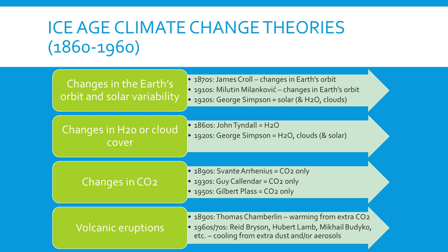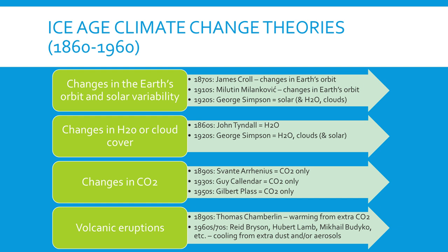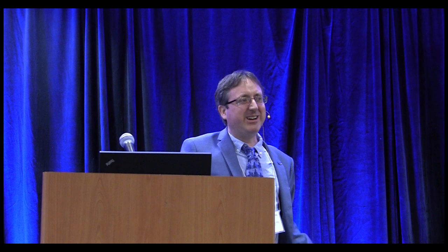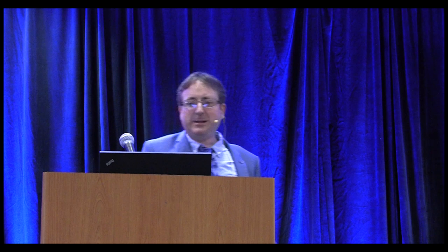Nowadays the prevailing IPCC consensus is that the ice ages are due to Milankovitch cycles — changes in Earth's orbit — but we still hold to the notion that CO2 is dominant for short-term climate change. Many people hear that Svante Arrhenius in the 19th century proved CO2 was the driver of climate, but a few years later his Swedish colleague Knut Ångström — son of Anders Ångström, after whom the unit is named — did experiments and systematic reviews of the IR spectrum of CO2, and his results said CO2 was not the driver.